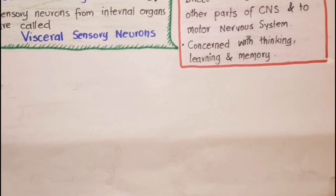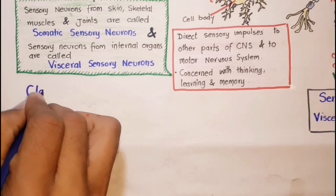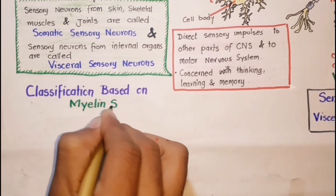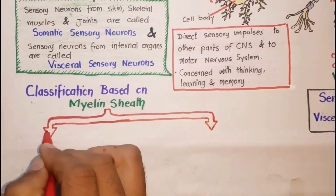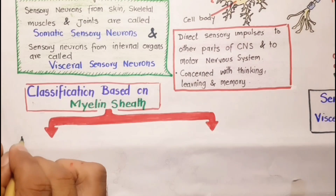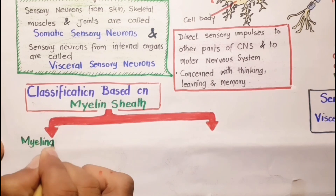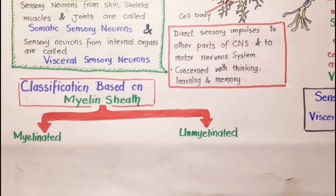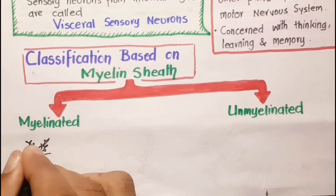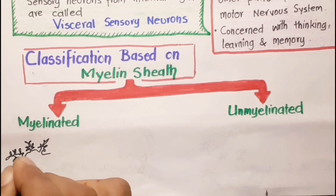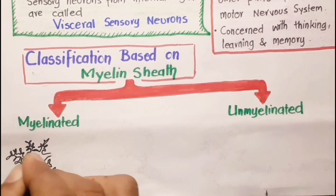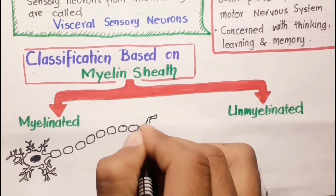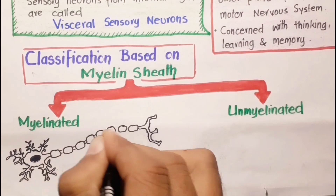Neurons can also be divided based on the presence of myelin sheath around their axons into myelinated neurons and unmyelinated neurons. Neurons which have the myelin sheath are called myelinated neurons, as illustrated in the drawing here.